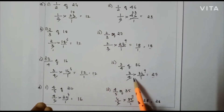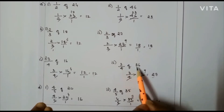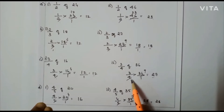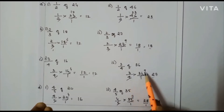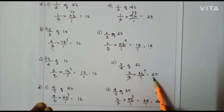Next case: 3/4 of 36, that is 3/4 × 36/1. Here I can cancel: 4 divides 36 giving 1 and 9. So 3 × 9 = 27 is the answer.